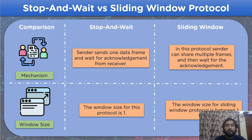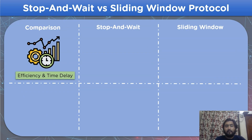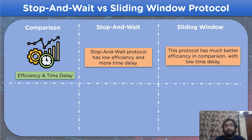Let's take a look at some other comparisons. The next comparison is based on efficiency and time delay. The stop-and-wait protocol has low efficiency and suffers from more time delay. As for the sliding window protocol, the efficiency is higher than the stop-and-wait protocol, which provides lower time delay during data transmission.